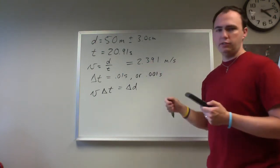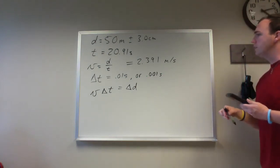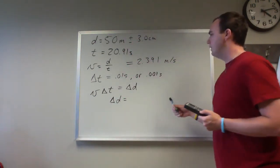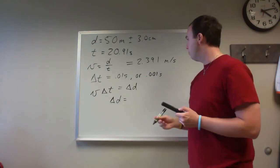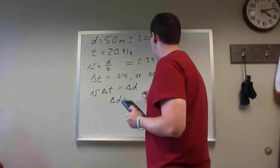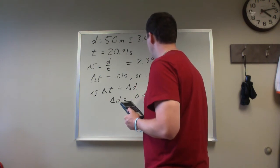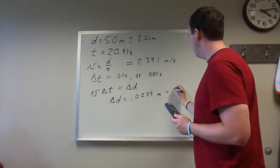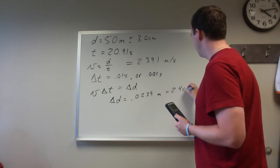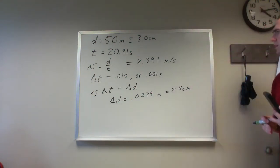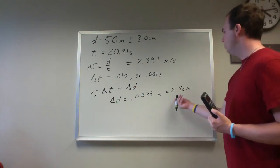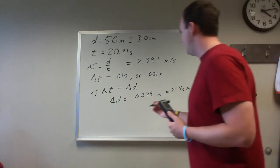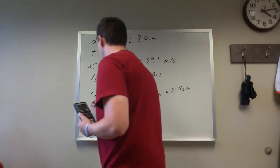Now I'm keeping a couple extra significant figures here so we need to compare that to the end. So then our delta d, if we take that velocity and multiply by 0.01 seconds, we're going to get 0.0239 meters, which is 2.4 centimeters. So if we're timing to the hundredth of a second, 2.4 centimeters, that's about the range of the tolerance there.